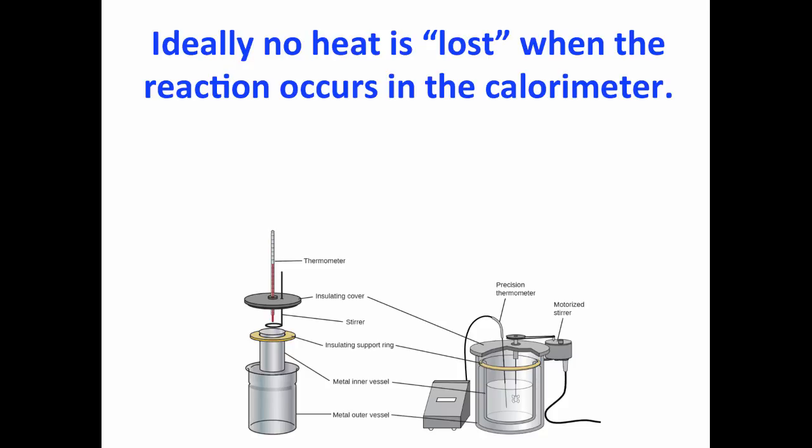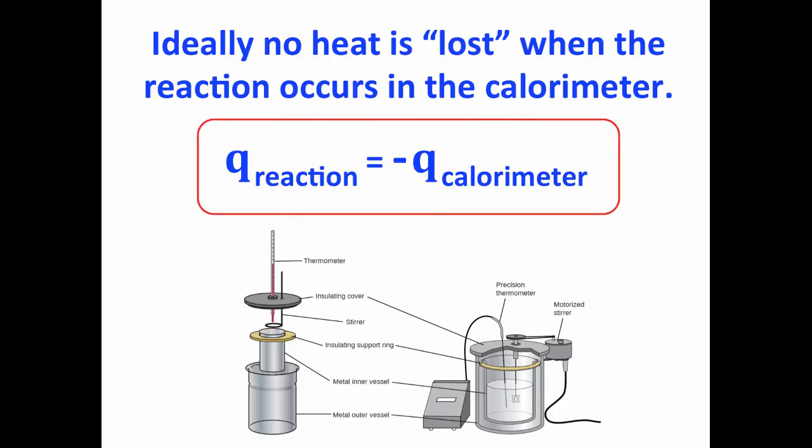In an ideal situation, we have no heat that's lost when the reaction occurs in the calorimeter. And the Q of the reaction and the Q of the calorimeter are equal to each other, but opposite in sign, so Q reaction equals negative Q calorimeter.